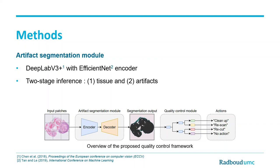The artifact segmentation module in the proposed framework was based on the DeepLab V3 Plus architecture. We used EfficientNet B2 as the encoder of the network. Inference was comprised of two stages. First, we used an internally developed tissue segmentation network to pre-process the input whole-slide image to eliminate the white spaces around the tissue. Then we applied the trained artifact segmentation network on the pre-processed image by feeding large tissue patches with test time augmentations.